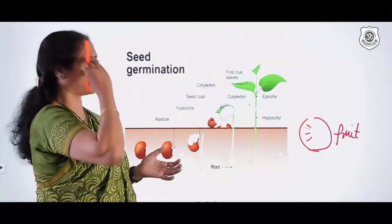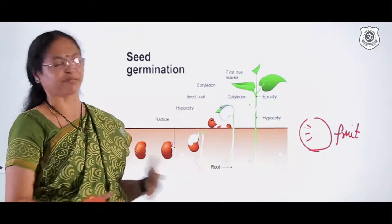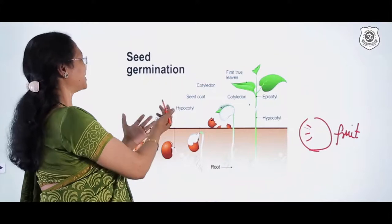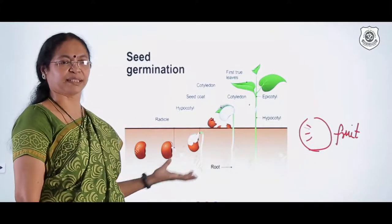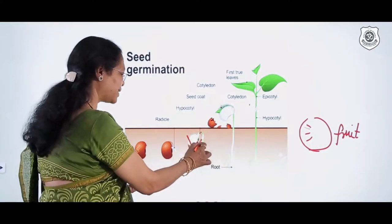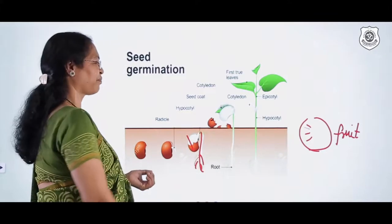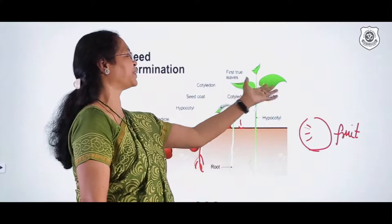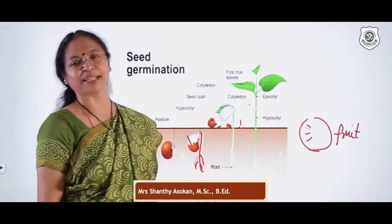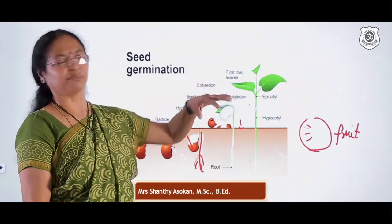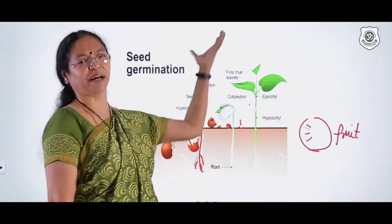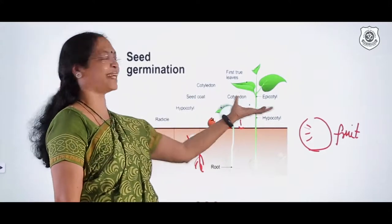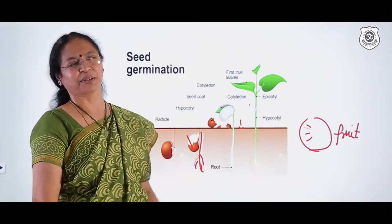We started this lesson with something very beautiful — the flower, which is the sex organ of the plant. We end the lesson with something equally beautiful — a new plant, the next generation. So we have just learned the complete process of sexual reproduction in flowering plants.